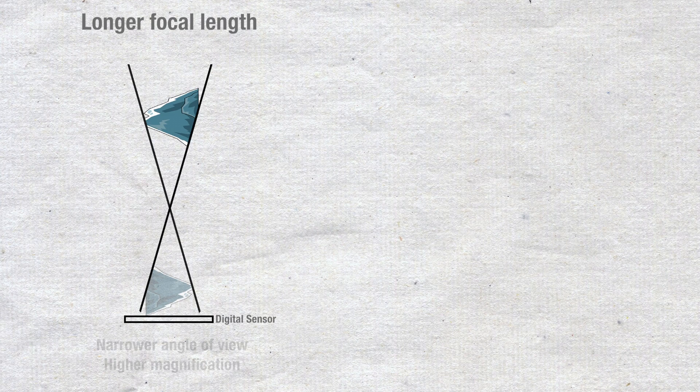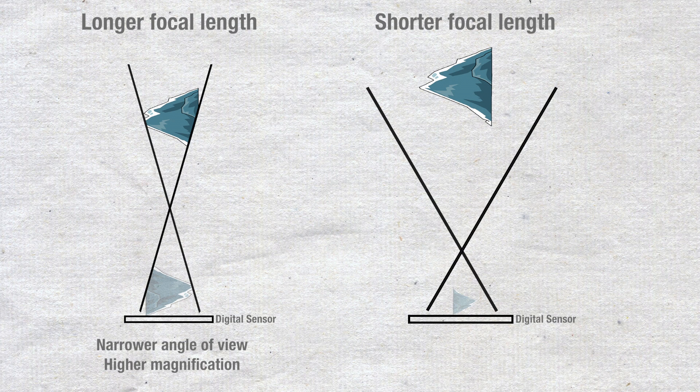Focal length gives us the angle of view of the shot as well as the magnification. A longer focal length will give us a narrower angle of view but a larger magnification, and oppositely a shorter focal length gives us a wider angle of view with a lower magnification.